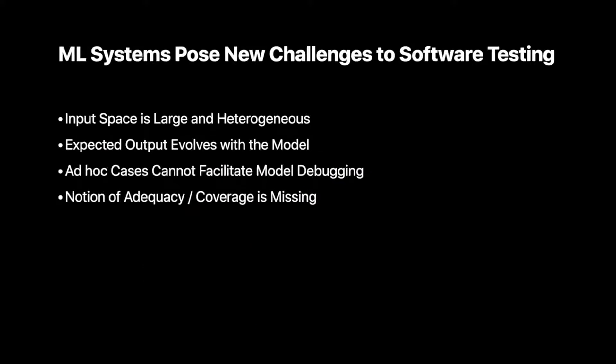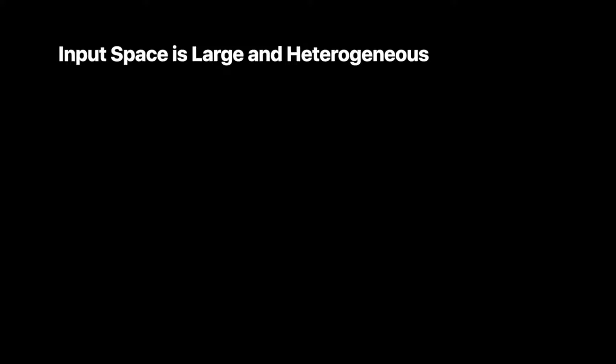We identify challenges that are not just specific to Speller — these challenges broadly apply to many ML systems. The first challenge is that the input space can be very large and heterogeneous. We can think about testing with image data or text data. Taking Speller as an example, the input space grows exponentially, even regarding the input string alone.